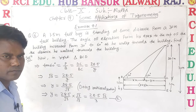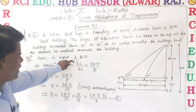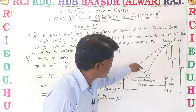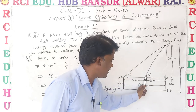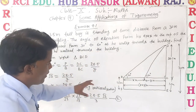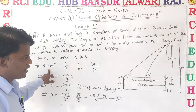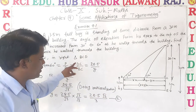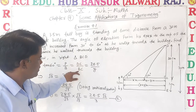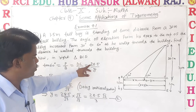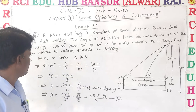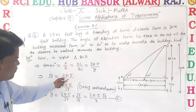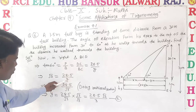Now in right triangle BCD with angle 60 degrees, the side opposite 90 degrees is the hypotenuse, the side opposite the angle is the perpendicular, and the rest is the base. Tan 60 equals perpendicular upon base, which is DC upon BC — that is 28.5 upon y. Putting the value of tan 60 degrees: root 3 equals 28.5 upon y. After cross multiplication: y equals 28.5 upon root 3.